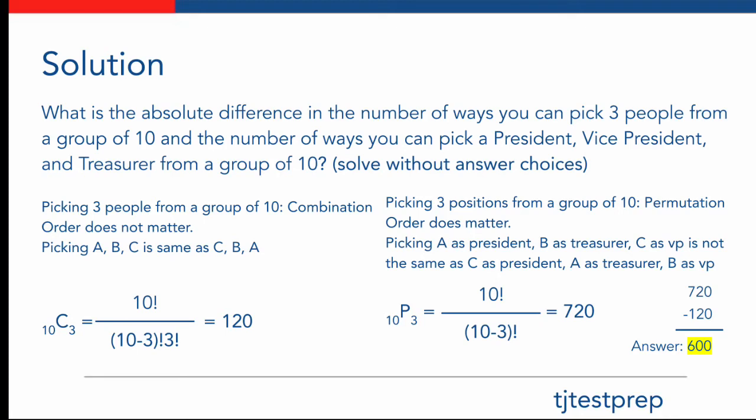Now remember, the problem asks for the absolute difference between these two, which leaves us with 720 minus 120, and that gives us our final answer of 600.